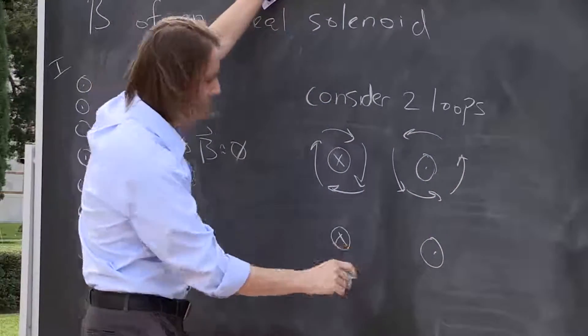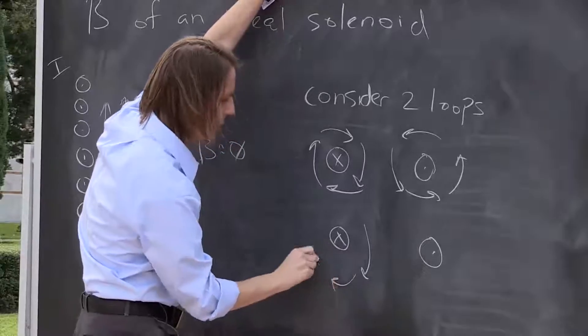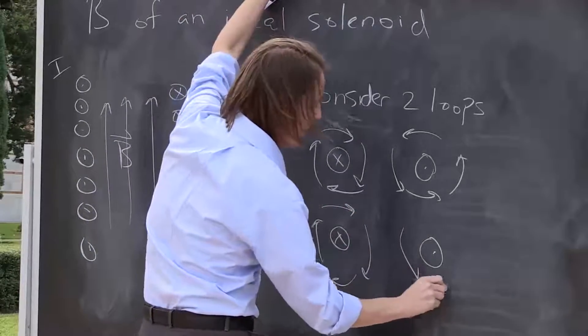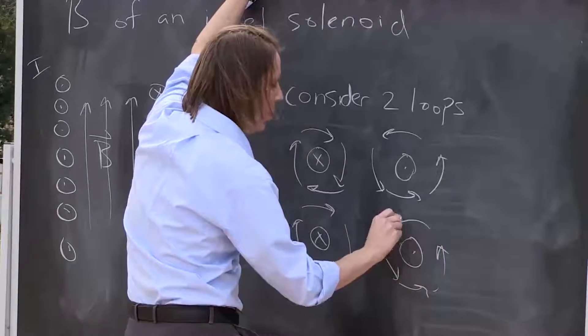So the field is going to circulate, and it will be the same thing here. Down, across, up, over, and then down, across, up, over.